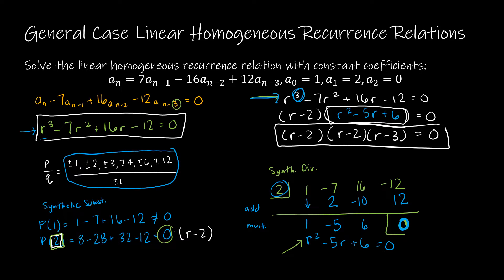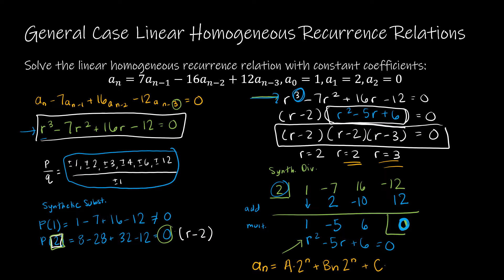Before moving on, we need to talk about why we care about those roots. Just like before, I have roots 2, 2, and 3. Since 2 is a repeated root and 3 is a distinct root, the general solution takes the form: a_n = A·2^n + Bn·2^n + C·3^n. This is the beginning of the solution, but we need to solve for A, B, and C.